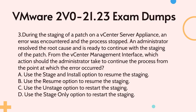Question 3: During the staging of a patch on a vCenter Server Appliance, an error was encountered and the process stopped. An administrator resolved the root cause and is ready to continue with the staging of the patch. From the vCenter management interface, which action should the administrator take to continue the process from the point at which the error occurred? A. Use the stage and install option to resume the staging. B. Use the resume option to resume the staging. C. Use the unstage option to restart the staging. D. Use the stage only option to restart the staging.